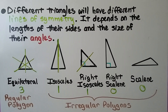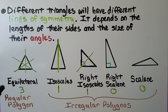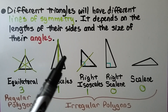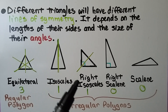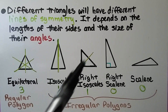Different triangles have different lines of symmetry depending on the length of their sides and the size of their angles. An equilateral triangle has three equal sides and three equal angles — it has three lines of symmetry and is a regular polygon. An isosceles triangle has two longer sides and one shorter side — it has only one line of symmetry. A right isosceles triangle also has one line of symmetry.